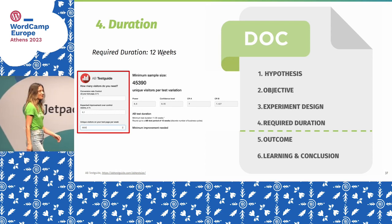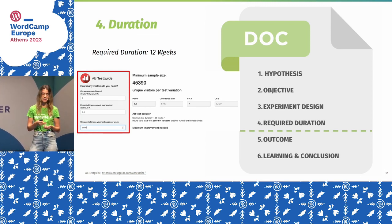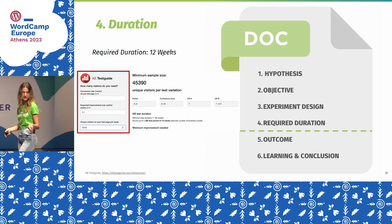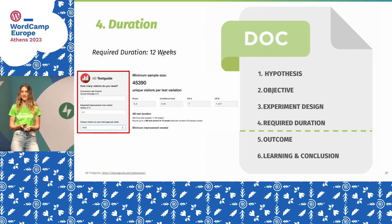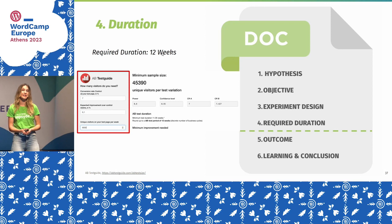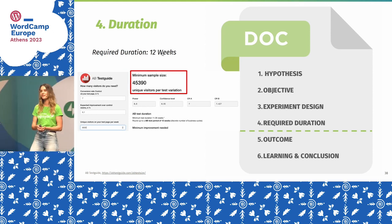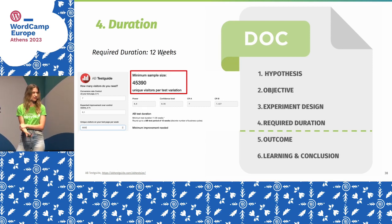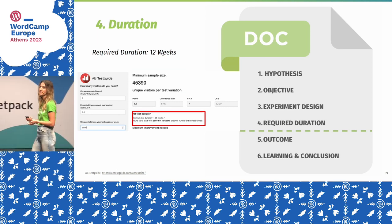Then the duration. For this test it would be 12 weeks. I linked an A/B testing tool — you type in the current conversion rate, the expected conversion rate, and the number of unique visitors. You see it requires a very high number of visitors to get statistically significant results, meaning we can really prove it is scalable. That's how we determined the duration.